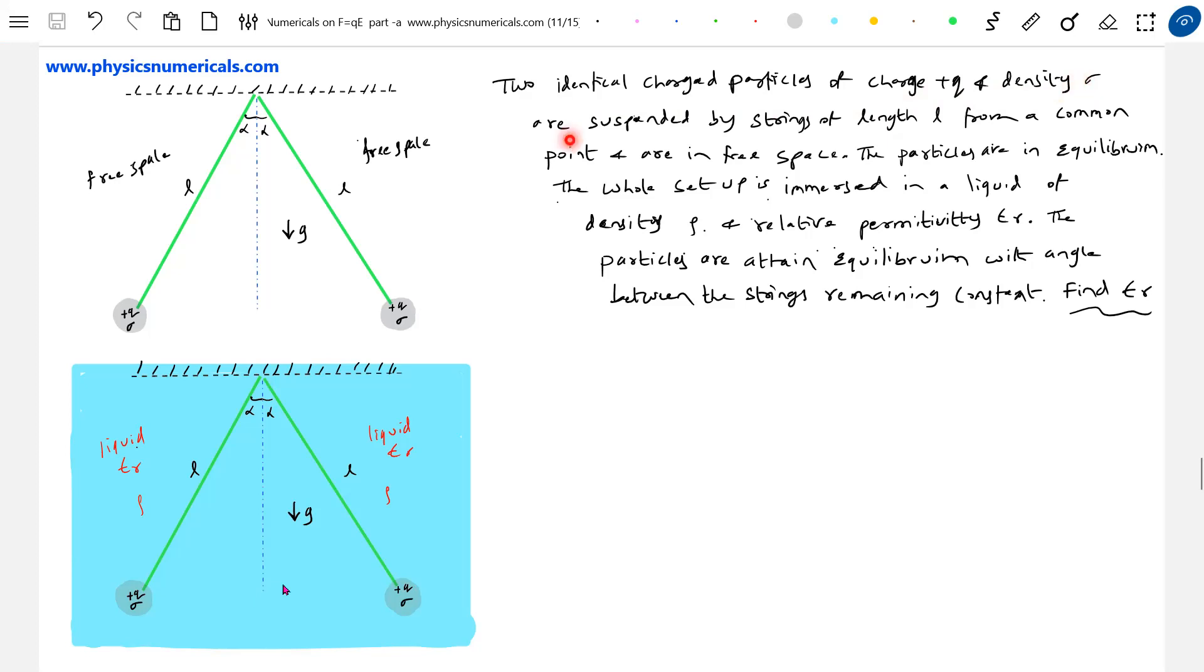Two charged particles with charge sigma are suspended by strings of equal length from a common point. This is a common point and they are in free space where the medium is only air, free space. The particles are in equilibrium, the system is in equilibrium. Now the whole setup is immersed in a liquid.